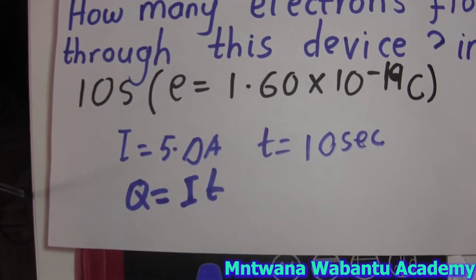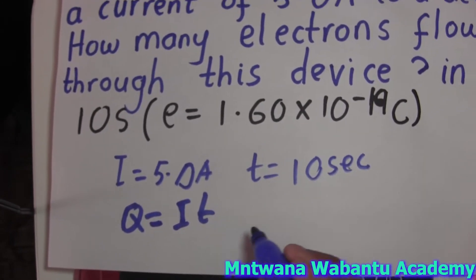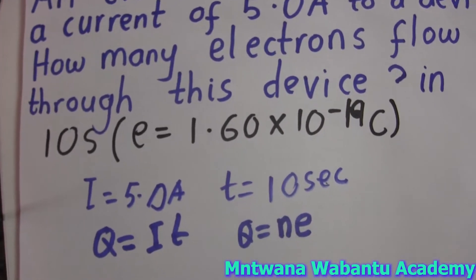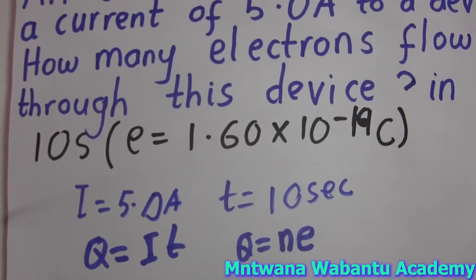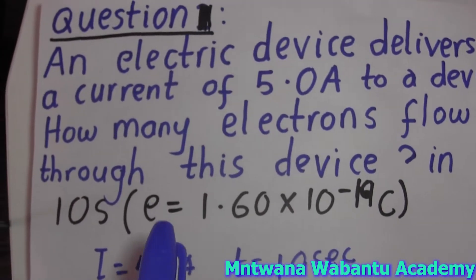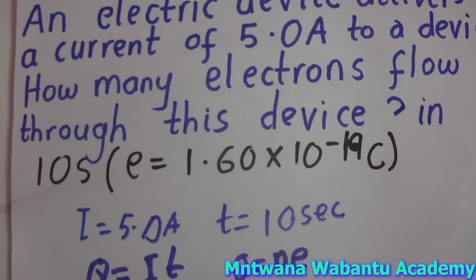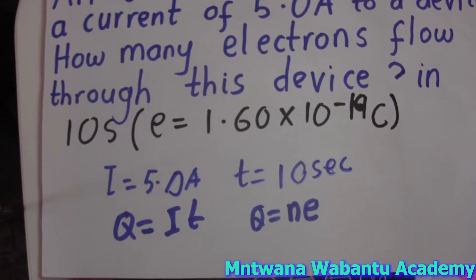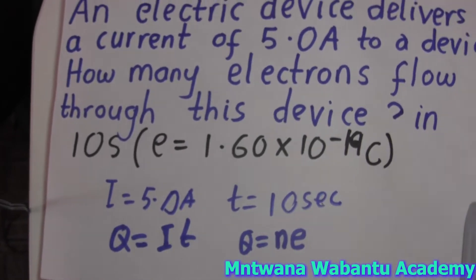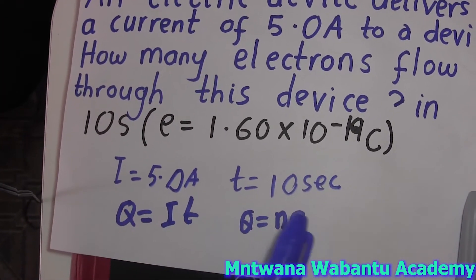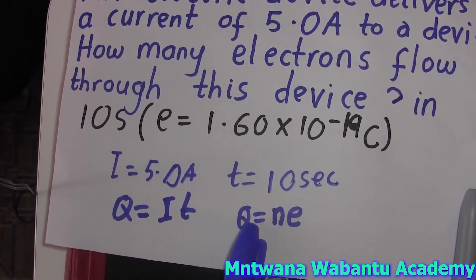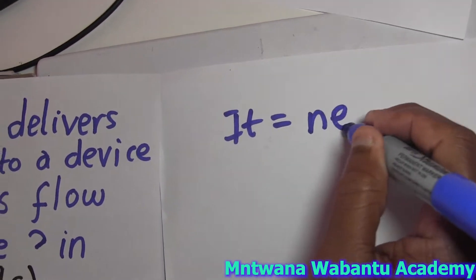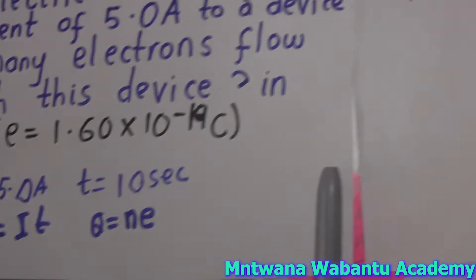This quantity can also be equal to the number of electrons times the charge of one electron. So quantity equals n times e, where n is the number of electrons flowing through the device or conductor, and e is the charge of one electron, which is 1.6 times 10 to the power of negative 19 coulombs. With this formula, since quantity equals IT and quantity equals ne, we can say IT equals ne.